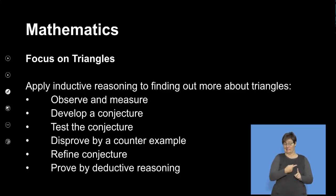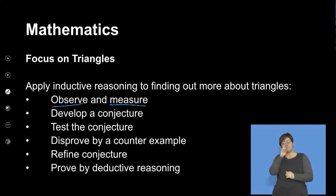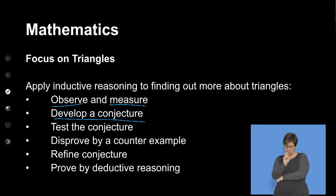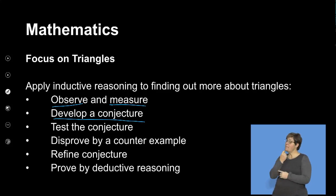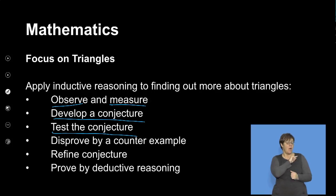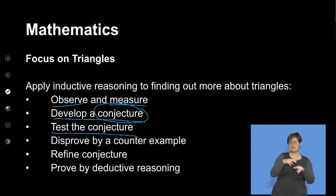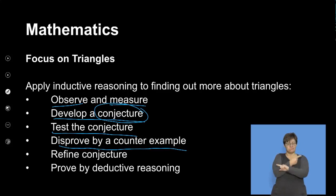When applying inductive reasoning to find out more about triangles, we observe and measure, then develop a conjecture. After seeing what has happened, I can make a statement considered a conjecture. Then I need to test it — is this true for all triangles? What conditions must the triangle satisfy? This is where we talk about variables you control: independent and dependent variables.